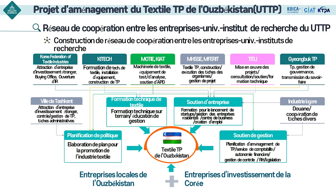Du côté ouzbèk, le ministère de l'enseignement supérieur, l'université du textile et le ministère de l'industrie légère participent ensemble de sorte que chaque ministère répartit ses rôles pour le soutien aux entreprises et la formation de la main-d'œuvre. La ville de Tashkent est en charge de l'accueil des entreprises et de diverses tâches opérationnelles et administratives. Grâce à la coopération entre les différents ministères et organisations, elle joue le rôle d'organisme soutenant les entreprises textiles locales et les entreprises d'investissement textiles coréennes de manière très intégrée.